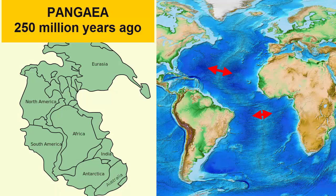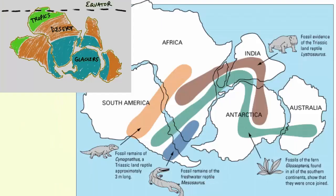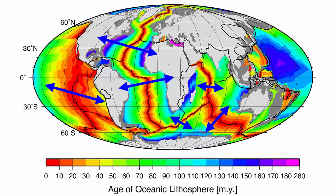Other evidence that connects these two halves together includes rocks and mountain ranges that exist on one side of the Atlantic and then continue and are found identically on the other side. The Atlantic Ocean has been spreading for the past 200 million years and is spreading today at a rate of about one to two centimeters per year — a little slower than your fingernails grow.